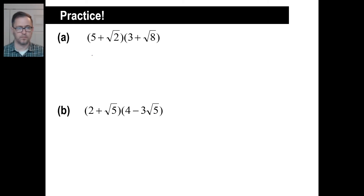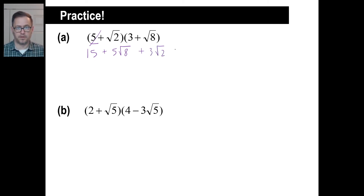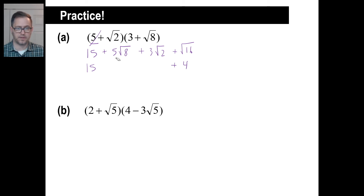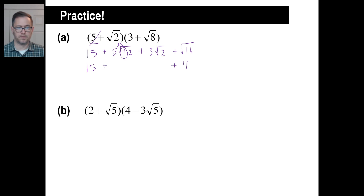Pause it and try A. Let's write the first term: 5 times 3, and then 5 times the square root of 8 — we'll come back to that. Plus 3 times the square root of 2. And then plus the square root of 2 times 8, which is the square root of 16 — you know that's 4. Now let's break down the square root of 8 into 4 times 2. The square root of 4 pulls out as a 2, so 5 times 2 is 10 — giving us 10 square root of 2 plus 3 square root of 2. We have 15 plus 4, which is 19, and then 10 plus 3 of that, which is 13 square root of 2. That's our answer.